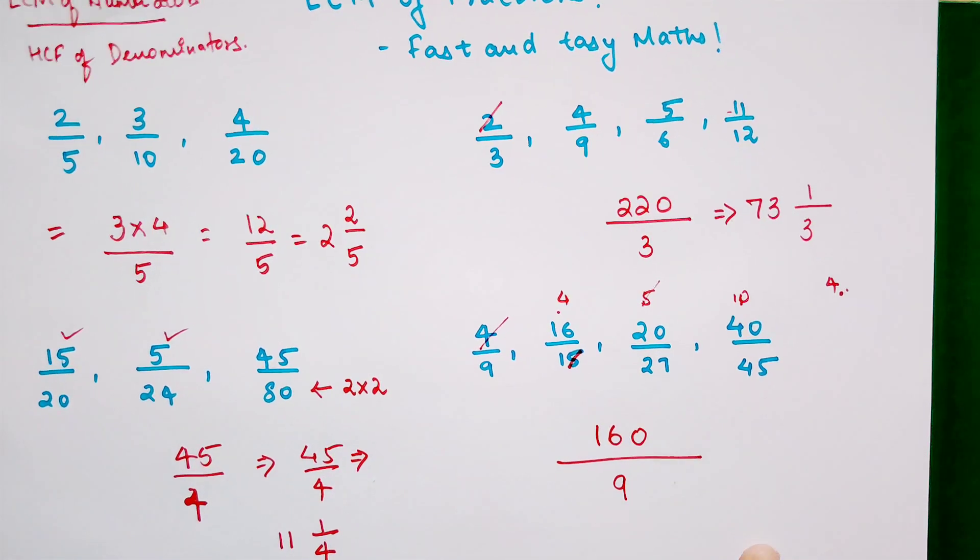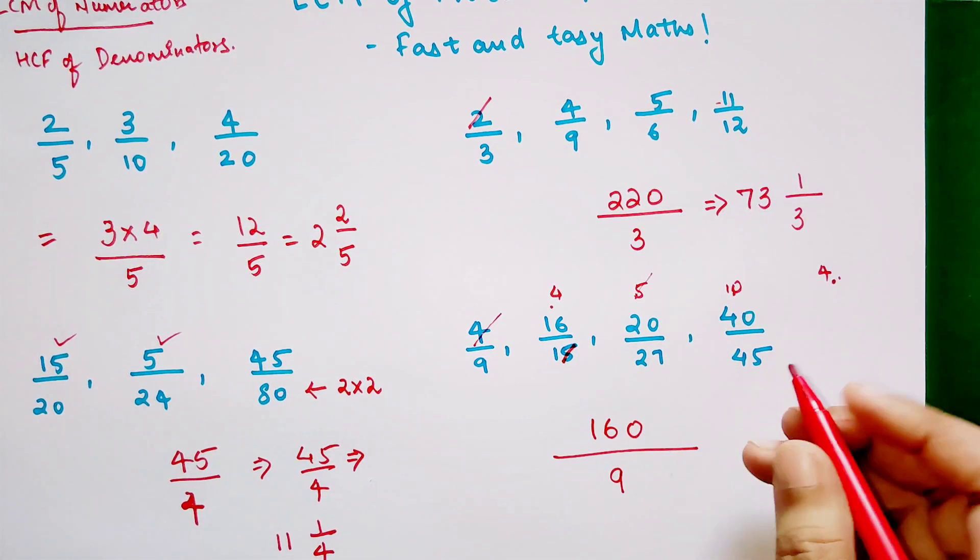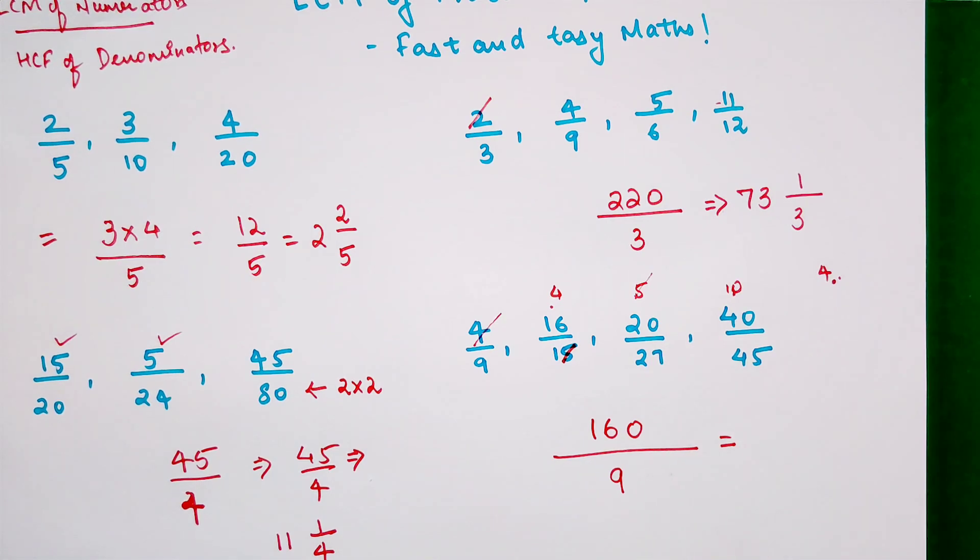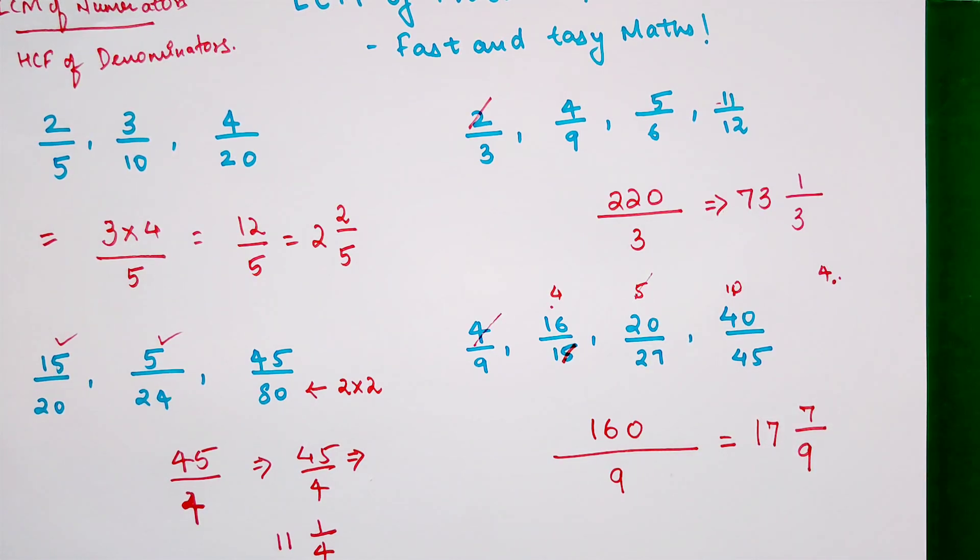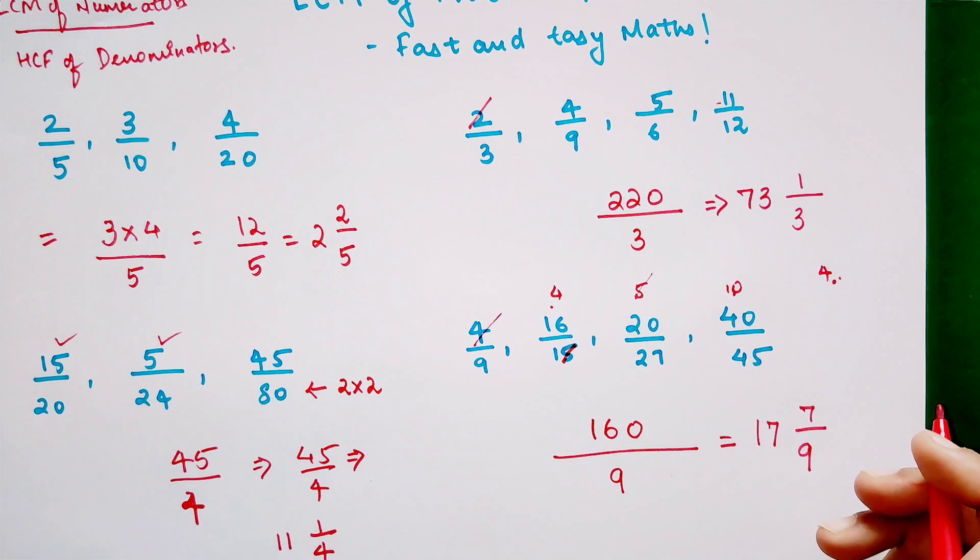So my final answer, now again we are going to convert this into a mixed form. So we will get 1, and then 16 may, if we take 9, so we are left with 7 and 70. So again 7, and then we are left with 7 upon 9. So this is my final answer.